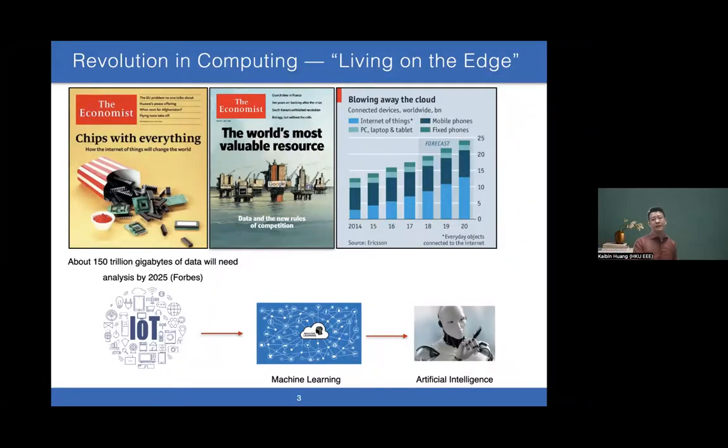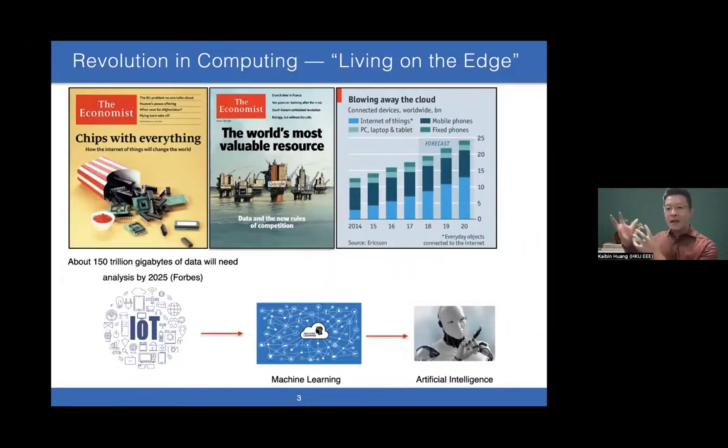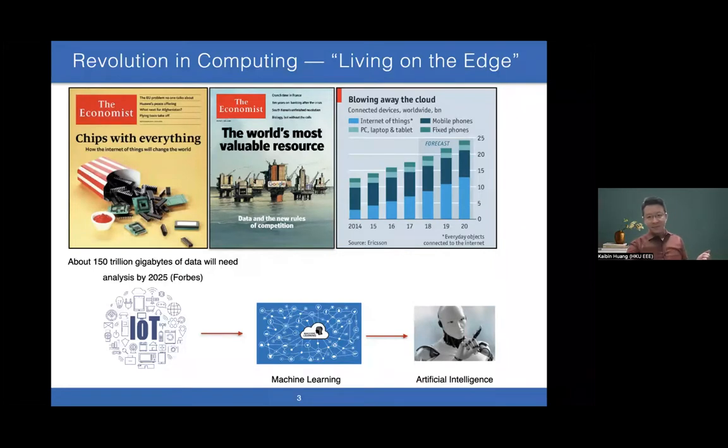Third, the number of edge devices connected to networks is growing exponentially—about 50 billion devices in the next few years. Every day, every hour, enormous amounts of data are generated at the network edge. Why are these data useful? Because we can use machine learning algorithms to convert data into artificial intelligence, making our services smart and automating society operations.